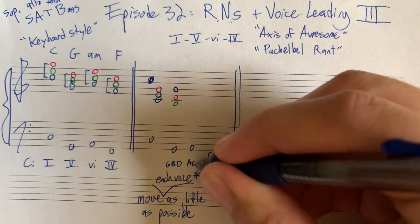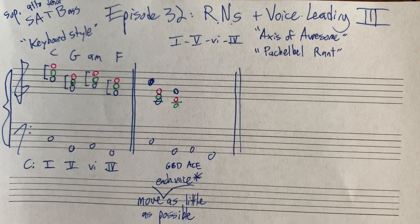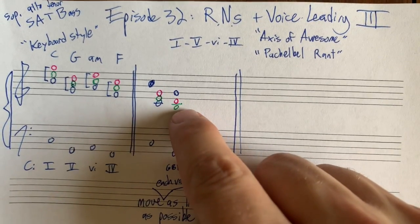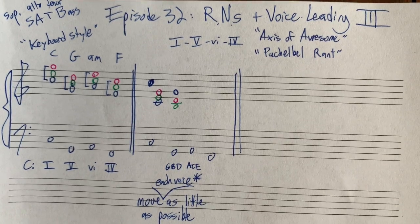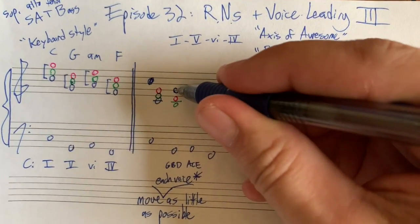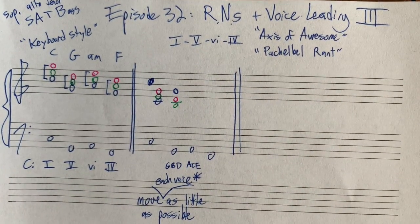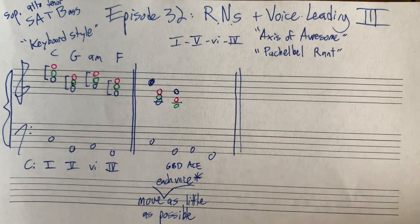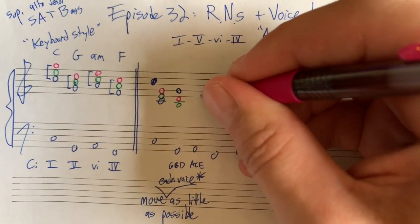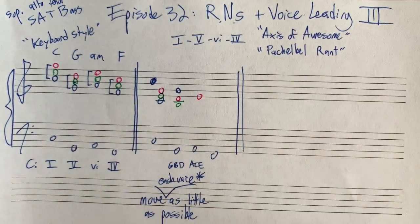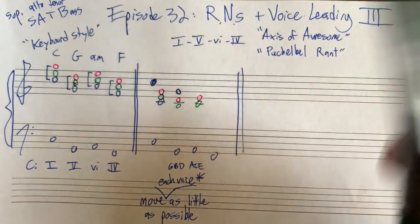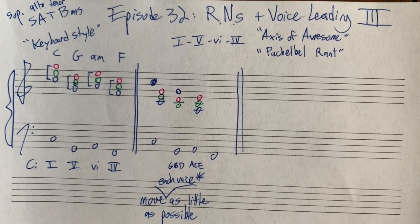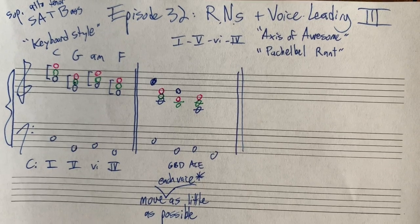Our next chord — A minor has A, C, and E in it, and none of those are common tones with what we have. One option is to move everything up a step, but remember we don't like when two voices do the same thing — both Gs would go up to A, and we don't like two voices doing the same thing. So let's move the G down to E, which is the fifth of A minor. Then D can go down to C, the third of A minor. And the B can go down to A, the root of A minor.